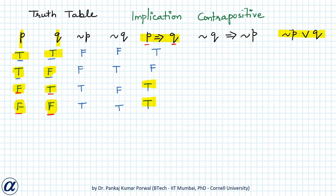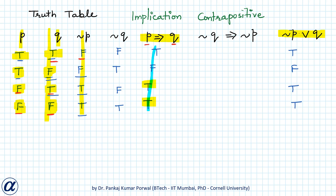Next, I will derive the truth table of not p or q. When q is true and not p is false, not p or q is true, because we need at least one of them to be true. When both are false, the or is false. When both are true, the or is true. When not p is true and q is false, the or is true. The truth table of p implies q — true, false, true, true — matches not p or q exactly, so p implies q is equivalent to not p or q.